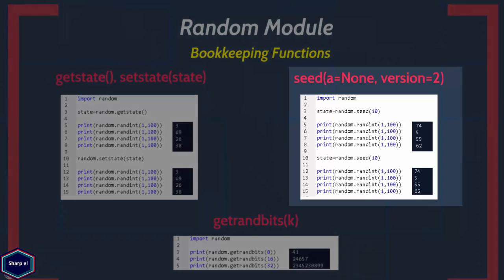The seed() function initializes the random number generator and takes two optional arguments a and version. If a is an integer, the integer value is used directly as the seed value. If no value is passed to a, then the actual system time is used as the seed value.